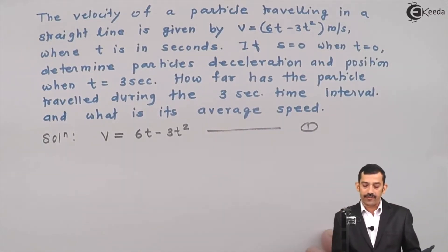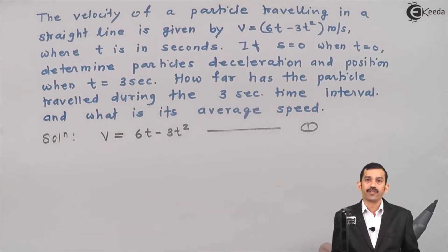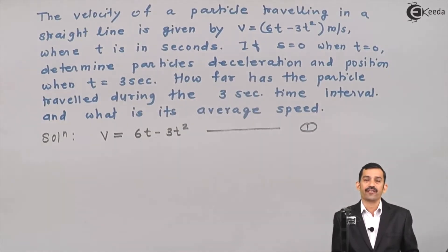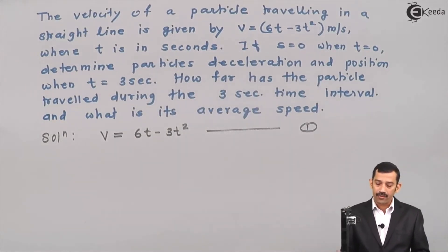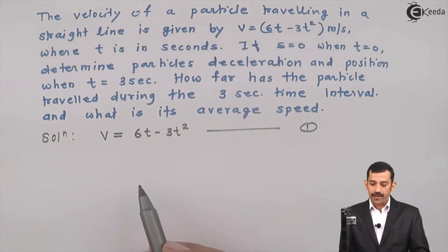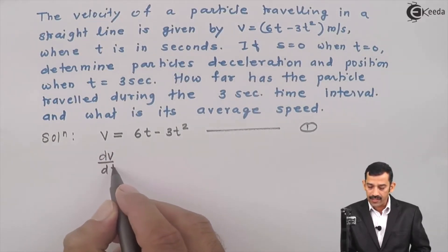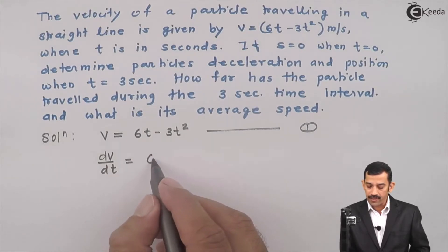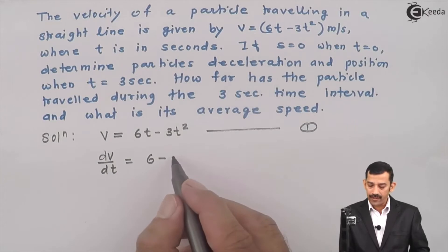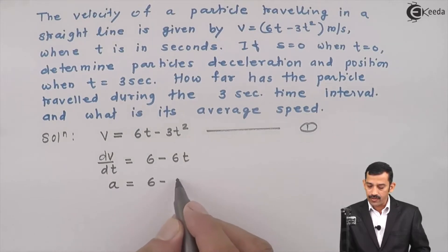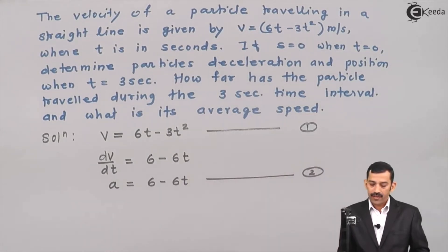Since the velocity equation is given in terms of time t, velocity is a function of t. To find the particle's acceleration, we differentiate the velocity equation with respect to time t. dv/dt gives acceleration = 6 minus 6t.